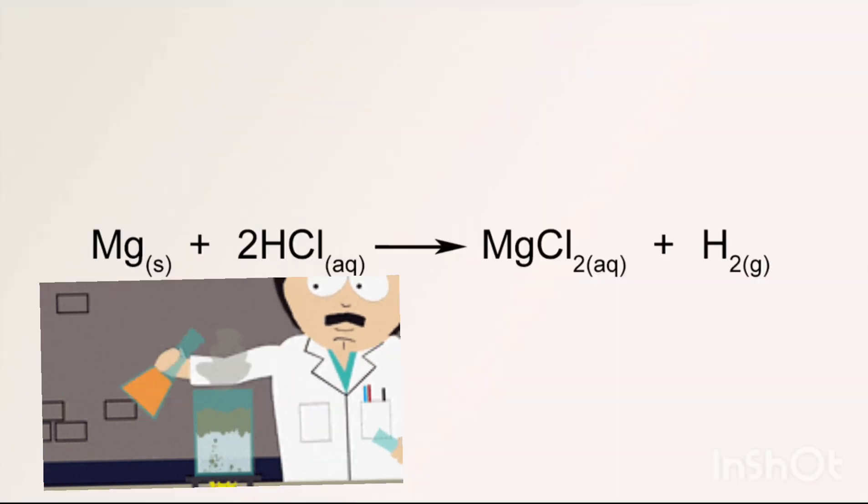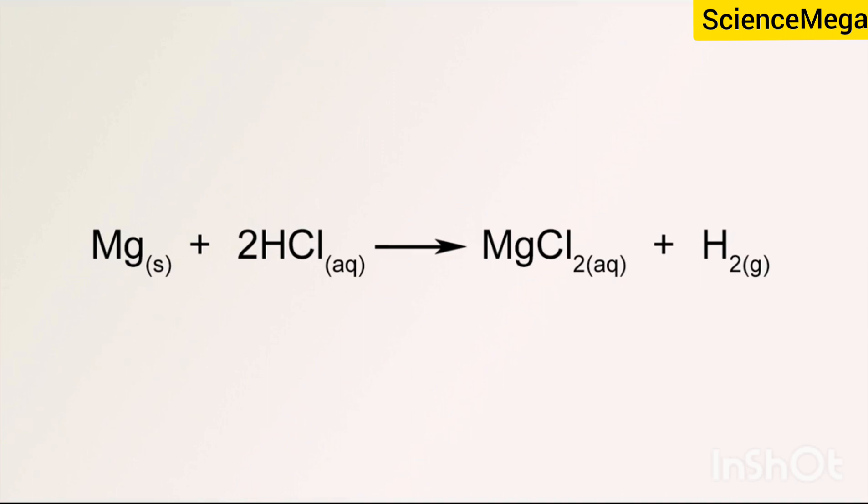We now look at the first lab work: the preparation of hydrogen gas. This is represented by the equation on your screen, where we have magnesium reacting with two moles of hydrochloric acid, producing magnesium chloride plus hydrogen gas.